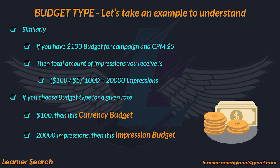Similarly, if your campaign budget is 100 dollars and your CPM is 5 dollars, the total number of impressions you will receive is 2000 impressions. When you choose the budget type for a given rate, if you wish to spend 100 dollars and then receive a number of impressions, then it is currency budget.